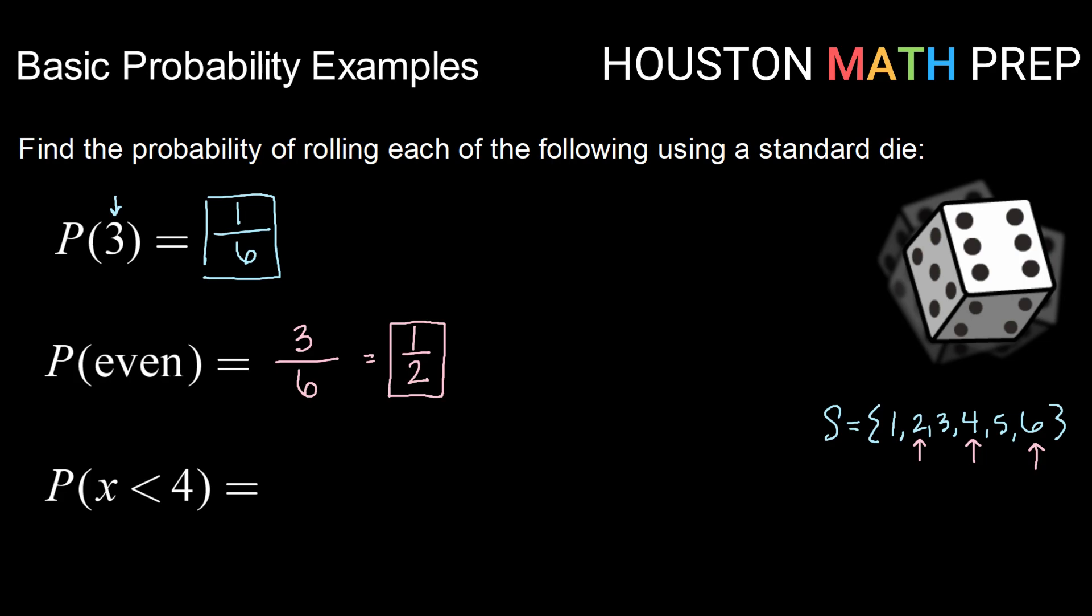Okay, last but not least, what is the probability of rolling a value, x, that is less than four? We know, again, that our total number of outcomes is six. So how many of those values are less than four?